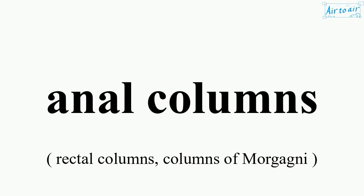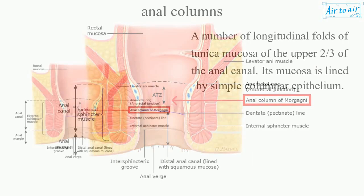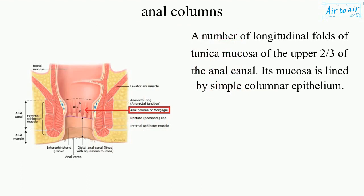Anal Columns are a number of longitudinal folds of the tunica mucosa of the upper two-thirds of the anal canal. The mucosa is lined by simple columnar epithelium.